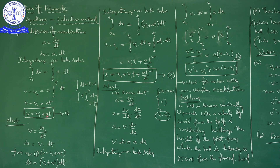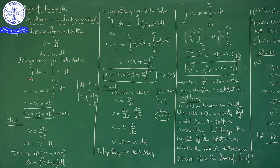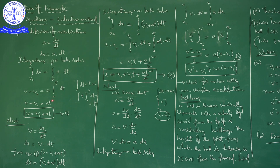We derived the first equation of motion through the calculus method. First we took the definition of acceleration written mathematically, then we integrated on both sides within the limits. When time is 0, velocity is v0 (initial velocity); when time is t, velocity is v. Through integration and applying limits, v minus v0 on the left and at on the right gives v is equal to v0 plus at. That is the first equation of motion derived.